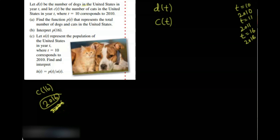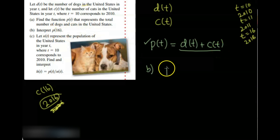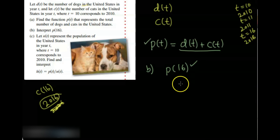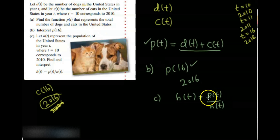We are human — we can make mistakes. Part A says: find the function p of t that represents the total number of dogs and cats in the United States. Total means you add them, so p of t equals d of t plus c of t — an application of the sum of two functions. p of 16 gives the number of dogs and cats in 2016. Part C says: let n of t be the population of the United States, and find h of t equal to p of t over n of t — a quotient of two functions.